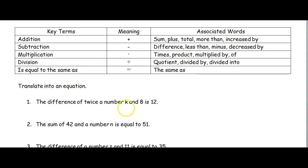Now, this tells me where the equal sign goes, so I put my equal sign right above it. The first thing I have to do is translate the left side of it. The difference of twice a number k and 8, difference tells us to put in the order that we're given.